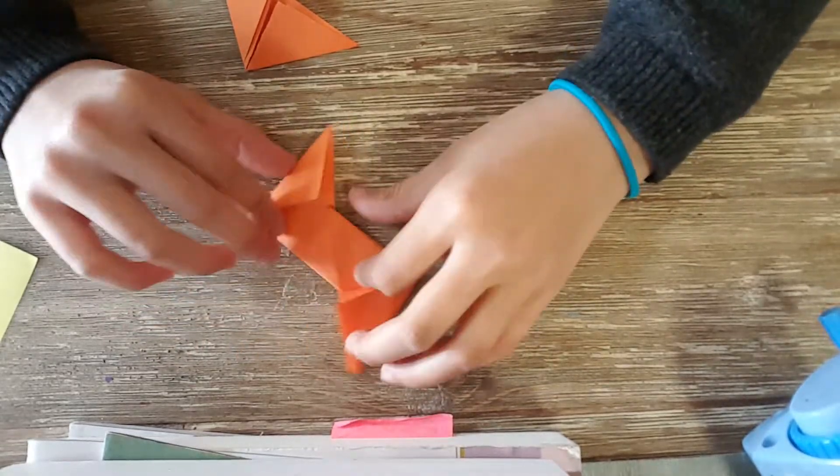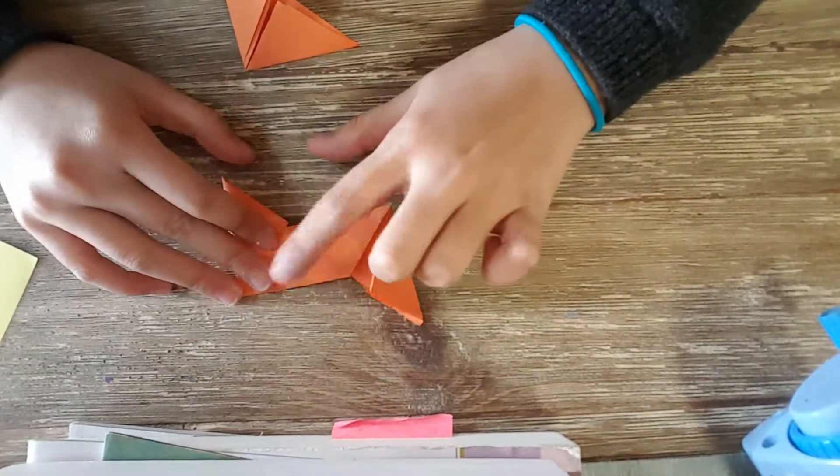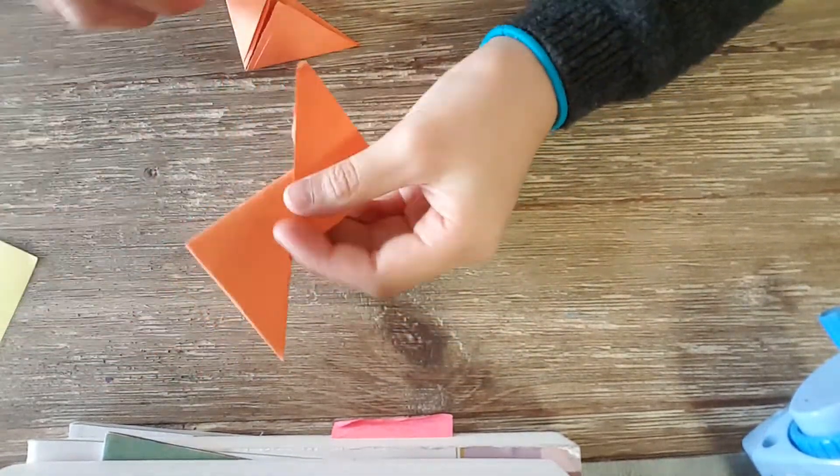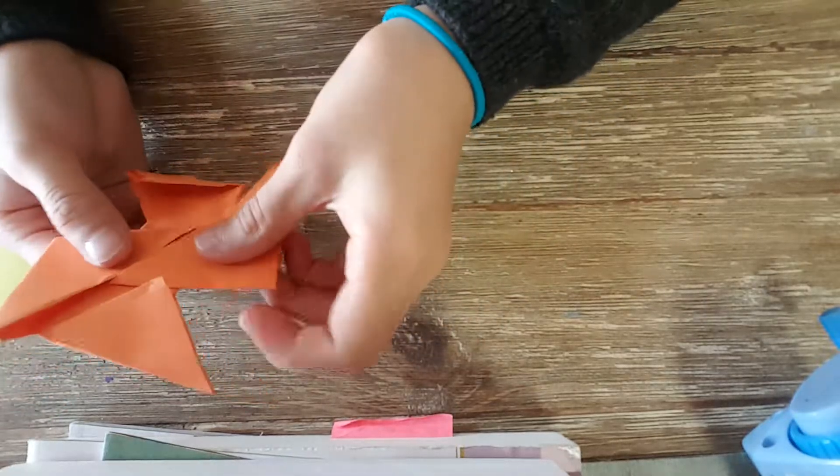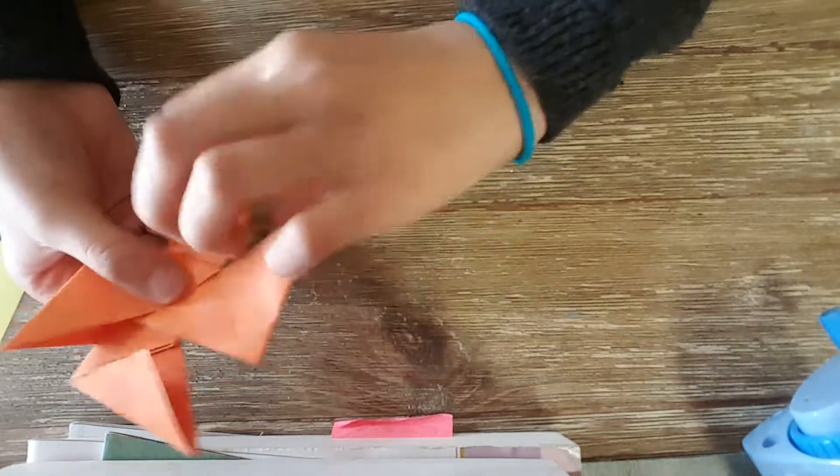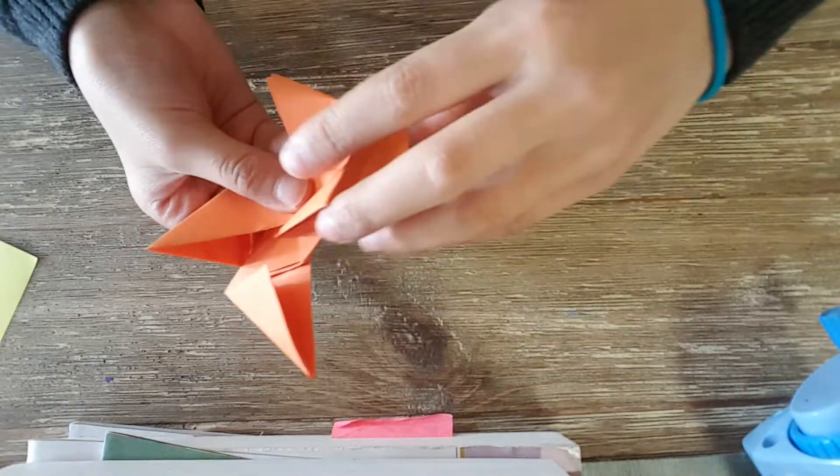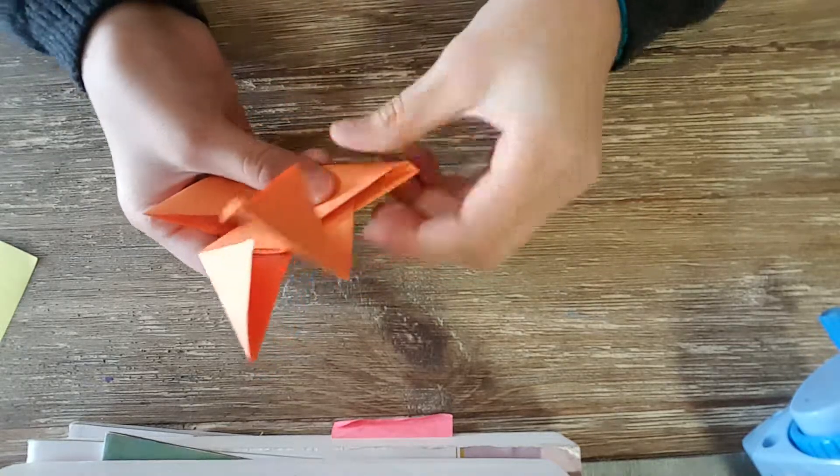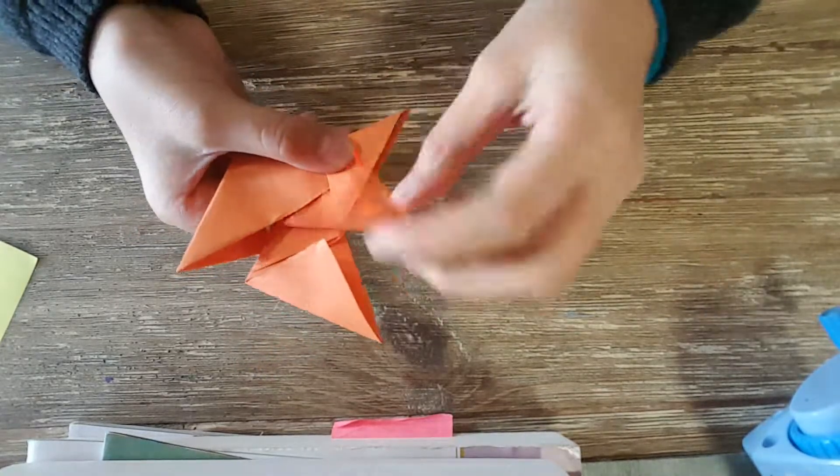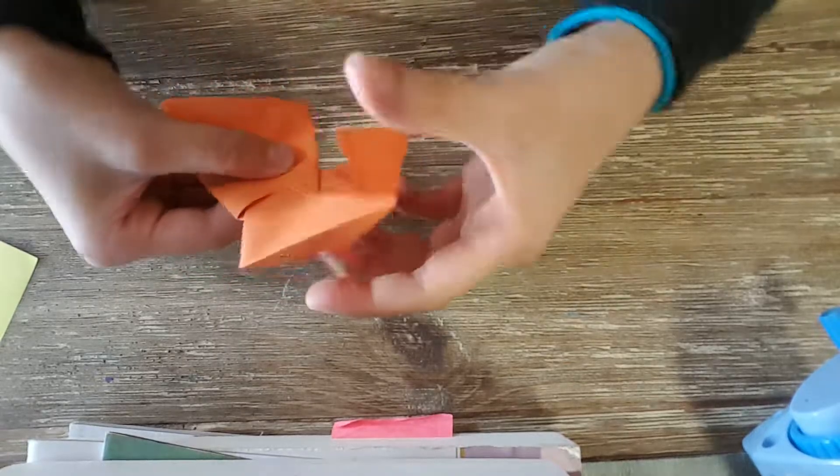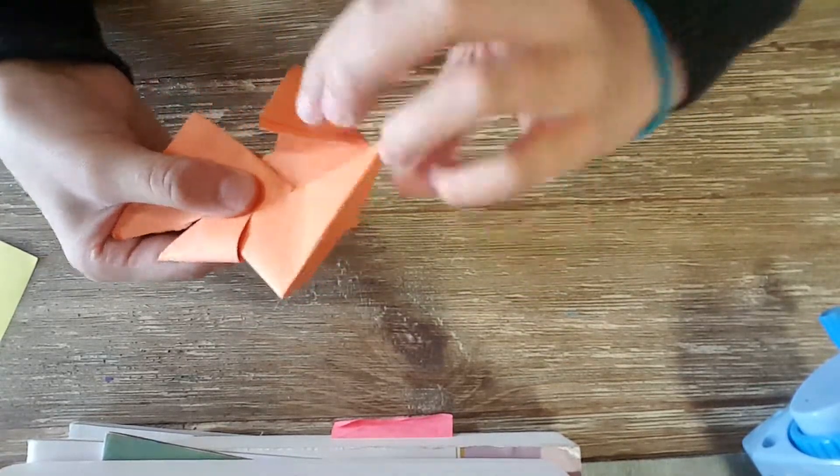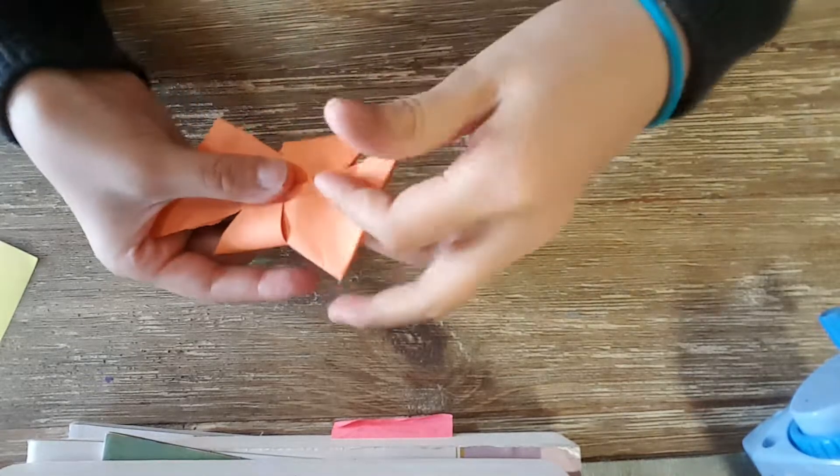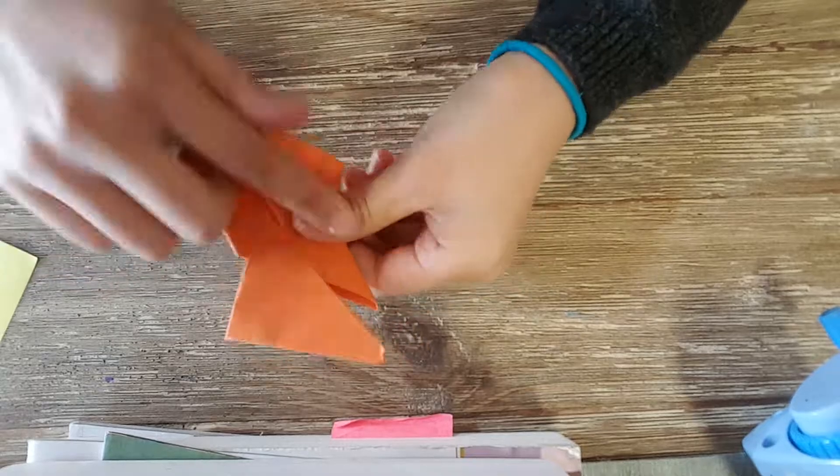After you're done with that, you can see one side you can't open. Put the two sides that can't open together, and then you're going to take one flap, lift this side, put the flap in, and close the part that you opened up. Then take the other flap on the other side, lift the one diagonal to it, put this flap in, and close it down. And now you've made one side of your ninja star.